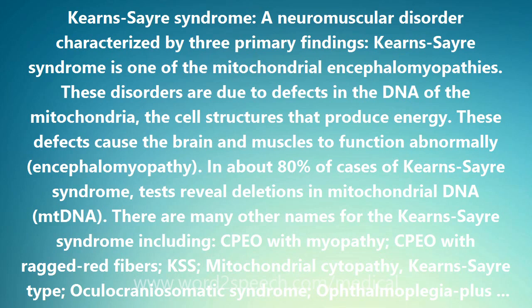There are many other names for Kearns-Sayre Syndrome, including: CPO with Myopathy, CPO with Ragged Red Fibers, KSS, Mitochondrial Cytopathy Kearns-Sayre Type, Oculocraniosomatic Syndrome, Ophthalmoplegia Plus Syndrome, Ophthalmoplegia with Myopathy, and Ophthalmoplegia with Ragged Red Fibers.